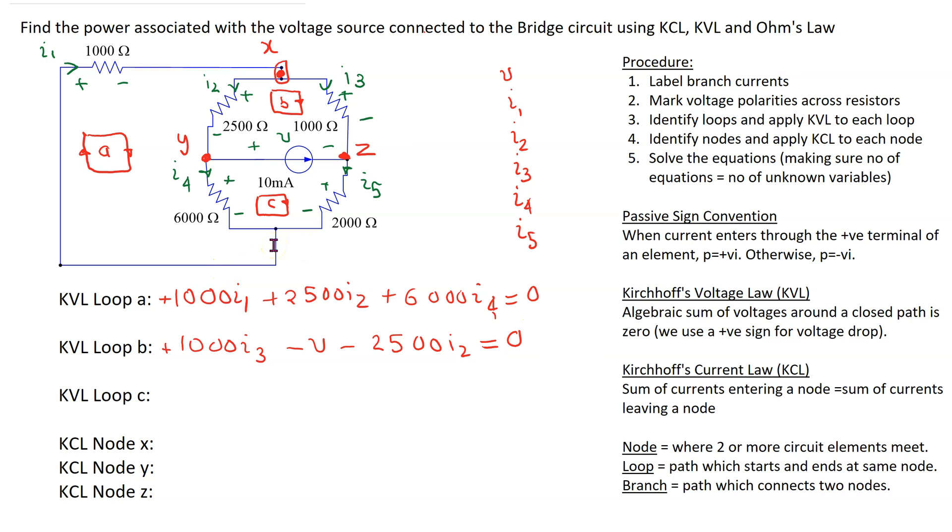Finally for loop C we start here going from plus to minus is a voltage drop, so this is plus V plus 2000 I5, and then going from minus to plus is a voltage rise so this is minus 6000 I4 equals zero.